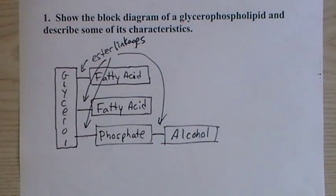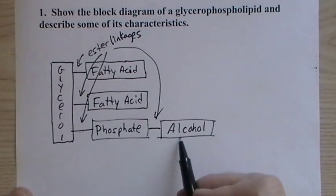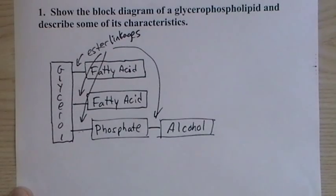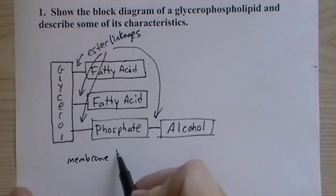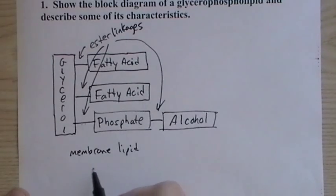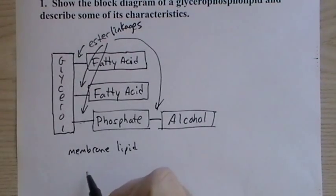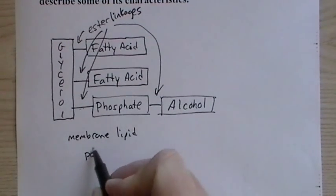The new thing here is that third branch is a phosphate group with an alcohol attached through an ester linkage. And these are membrane lipids. This is a type of membrane lipid. It's almost exclusively used as components of cell membranes.